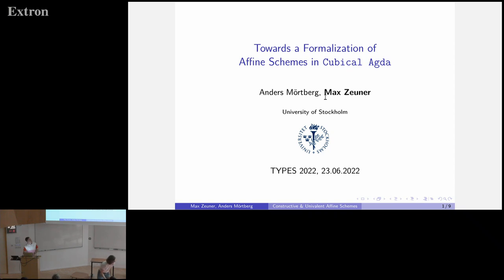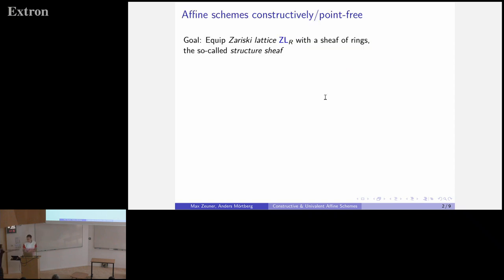I'm going to talk about an ongoing formalization project that is joint work with my supervisor Anders Mertbel. The idea is to formalize a constructive approach to affine schemes, or you might call it a point-free approach. The goal is to construct two things. Firstly, the so-called Zariski lattice ZL, with a little underscore R indicating that we work over a fixed commutative ring. And then, once we have the Zariski lattice, we want to construct the so-called structure sheaf on the Zariski lattice.